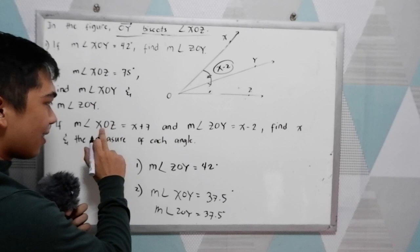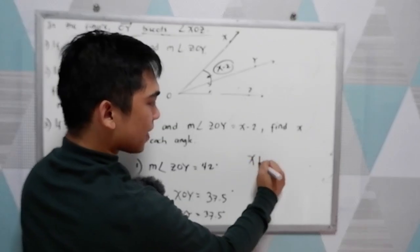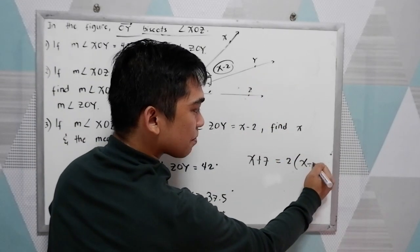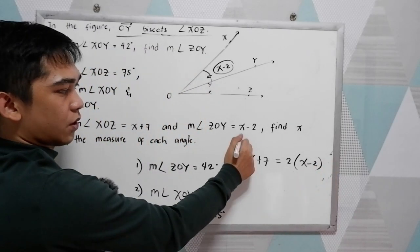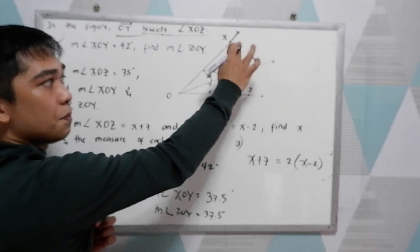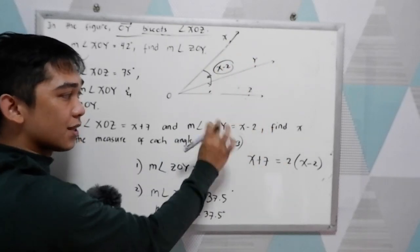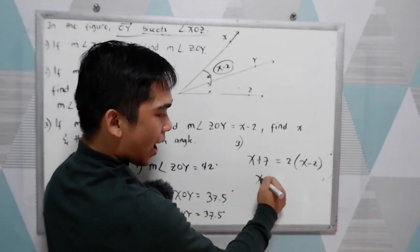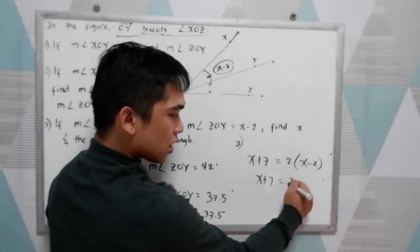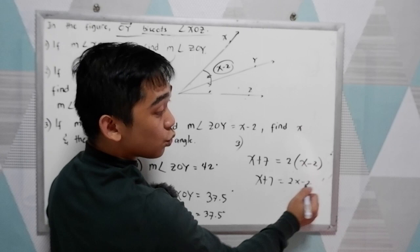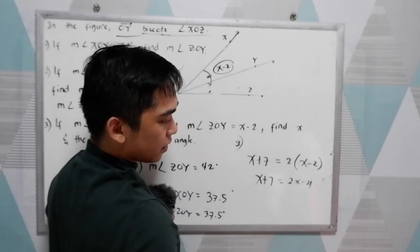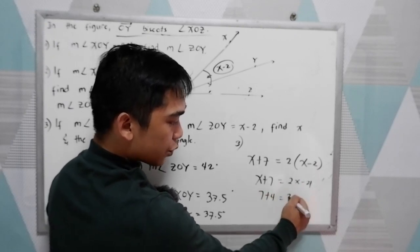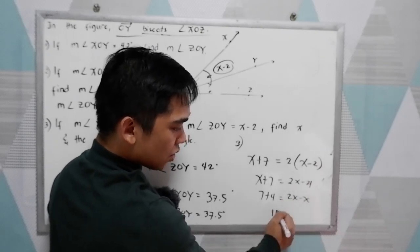So we know that angle XOZ, which is X plus 7, equals twice angle ZOY, which is twice X minus 2. Because these two are equal, we have X plus 7 equals 2 times X, which is 2X minus 2 times 2, giving us 2X minus 4. So 7 plus 4 equals 2X minus X, so X equals 11.